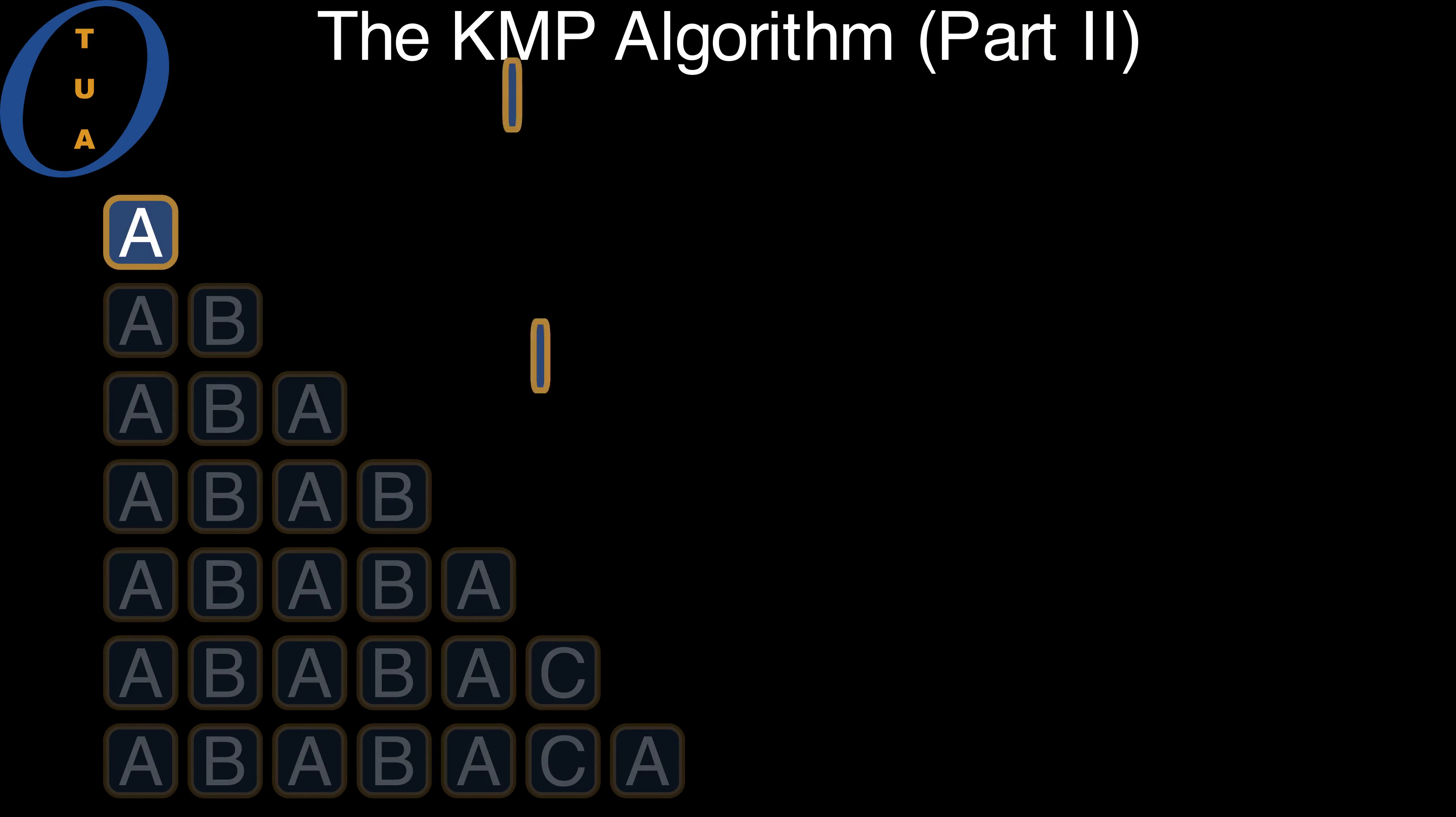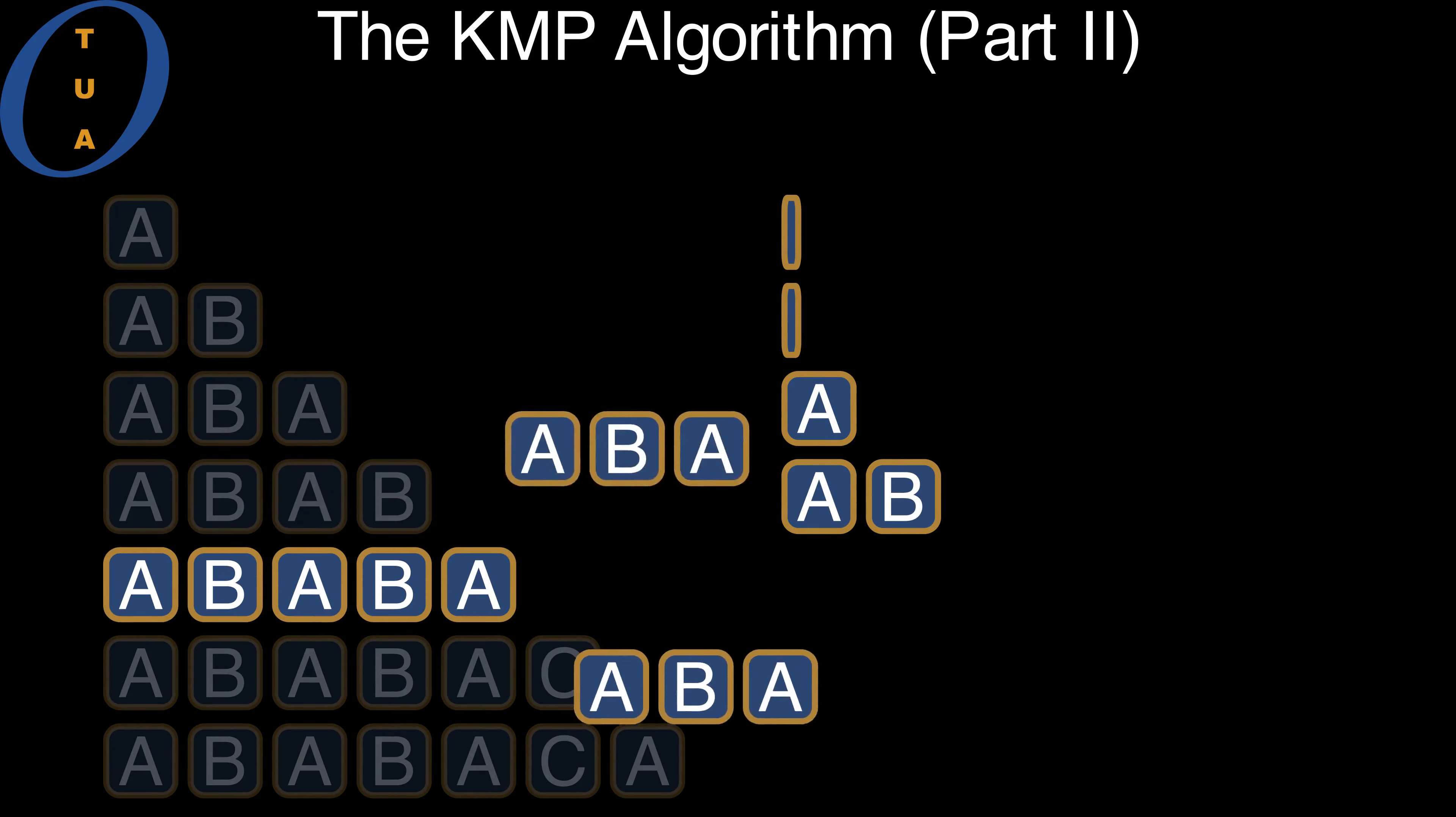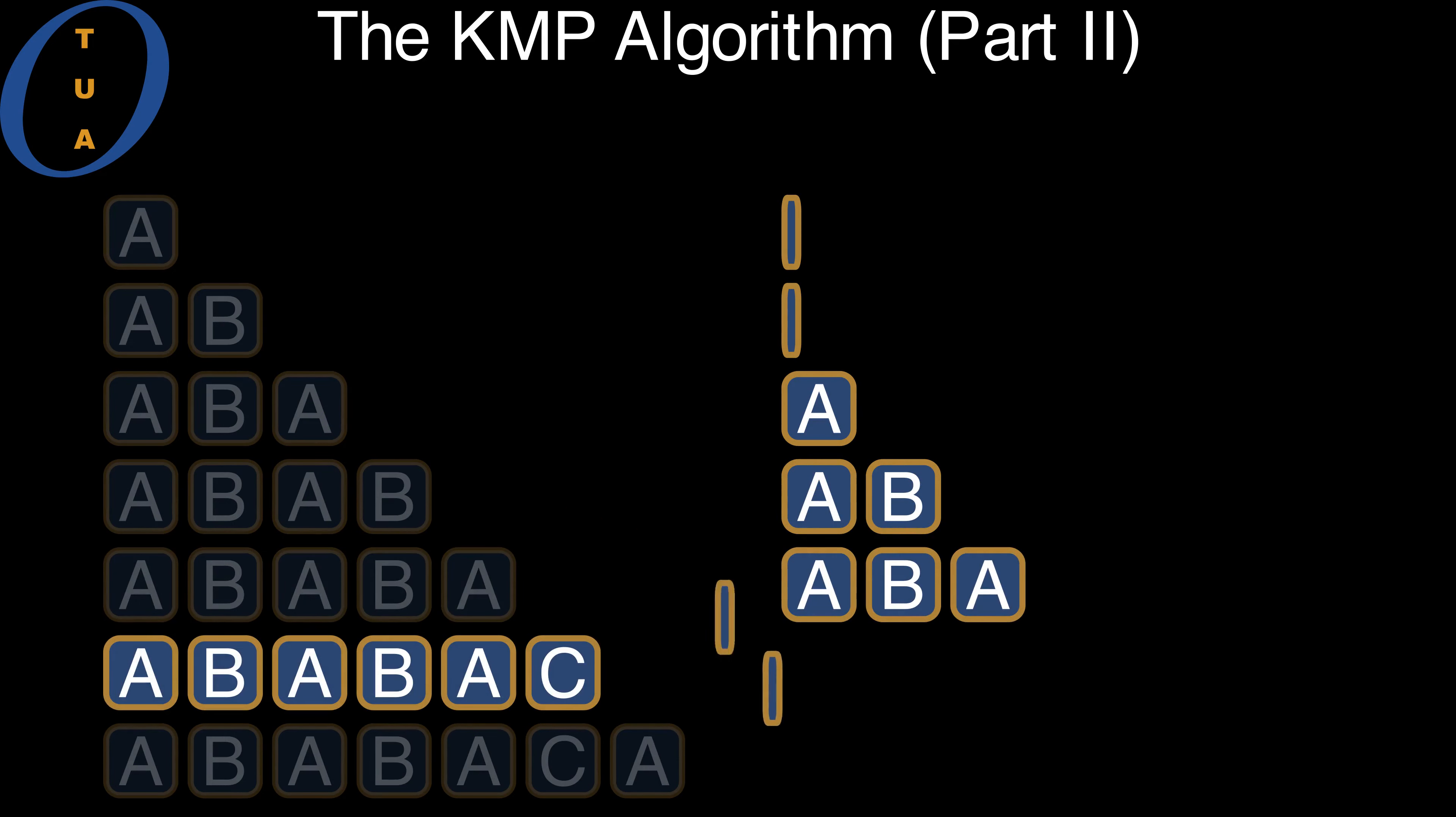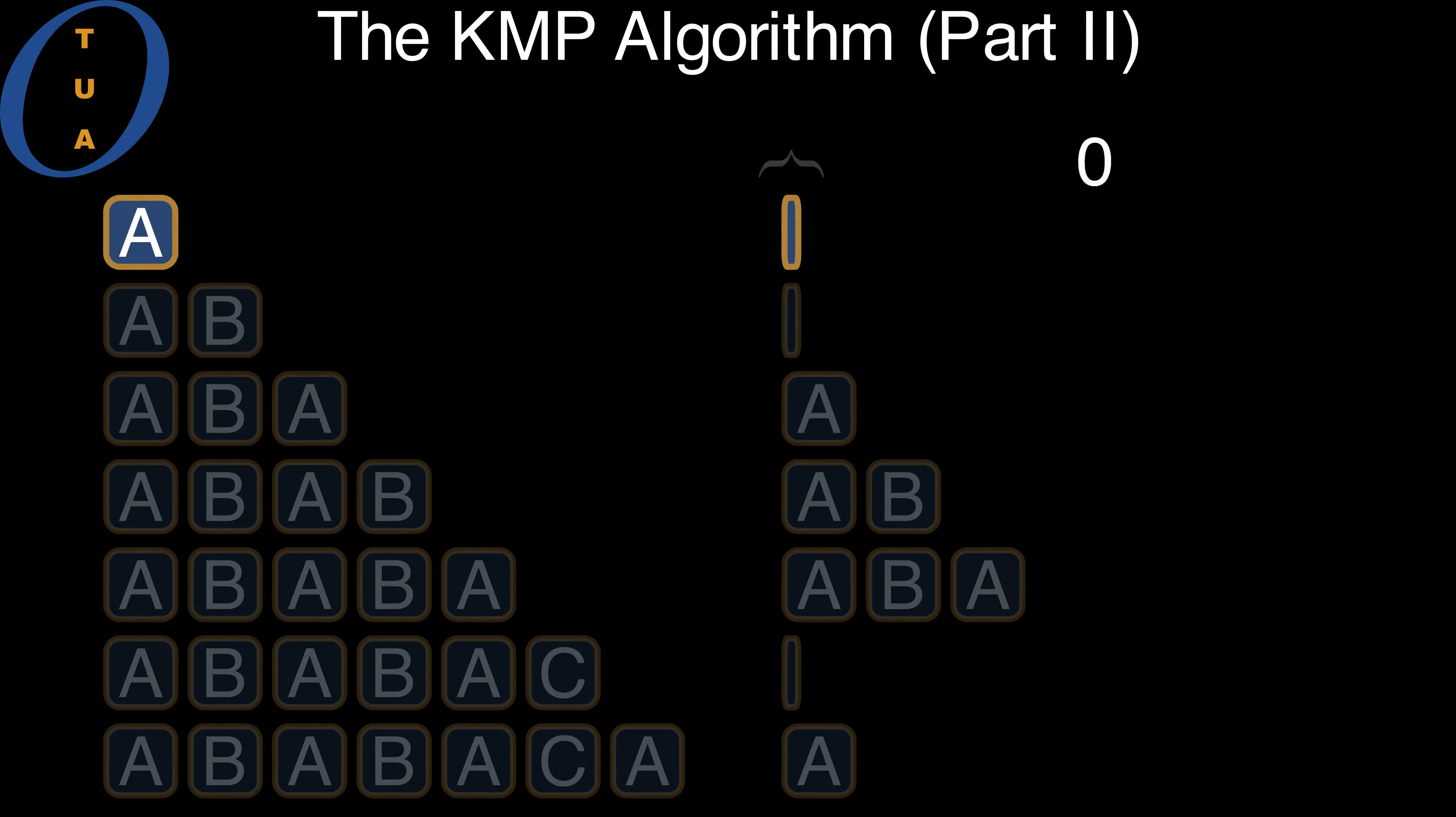KMP has a pre-computation phase, where for each such prefix, the longest proper border is computed. For each such border, its length is saved into an array.